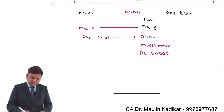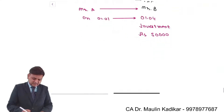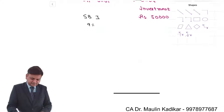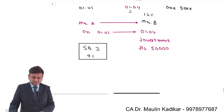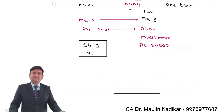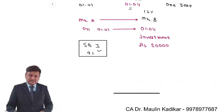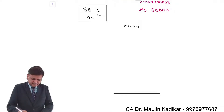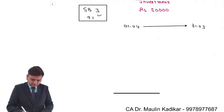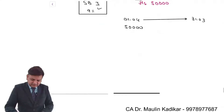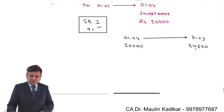Now after 3 months, that is on 1st of April, let us assume that Mr. A finds that State Bank of India is giving a rate of interest of 9%. Mr. A will make an investment of ₹50,000 in SBI at 9%, which is the rate prevailing in the market. Investment is made on 1st of April, and the deposit will mature after 1 year, that is 31st of March of the next year. So ₹50,000 plus 9% — the maturity amount of the deposit in SBI is going to be ₹54,500.